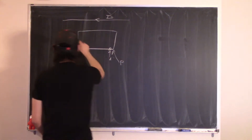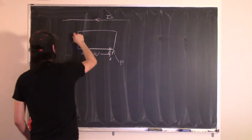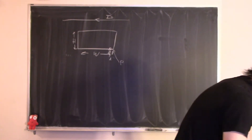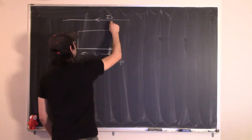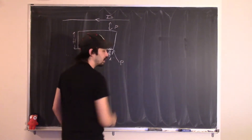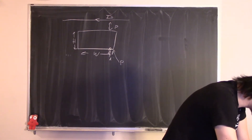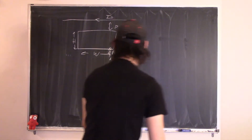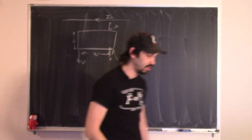The loop has dimensions H and W — this is H, this is W — and it is originally a distance P away from the wire. What we want to do is find the current that flows through the loop if it is moving away with some constant velocity V.